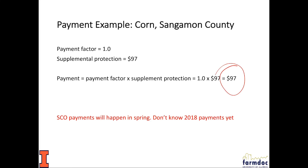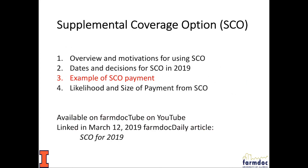We will not know what SCO payments are until spring, because RMA has to calculate the county yields, and those won't be known until then. It's March 12th today when I'm recording this, and we don't yet know what 2018 payments will be or if there are any for 2018. Alright, we went through an example of SCO payments here.